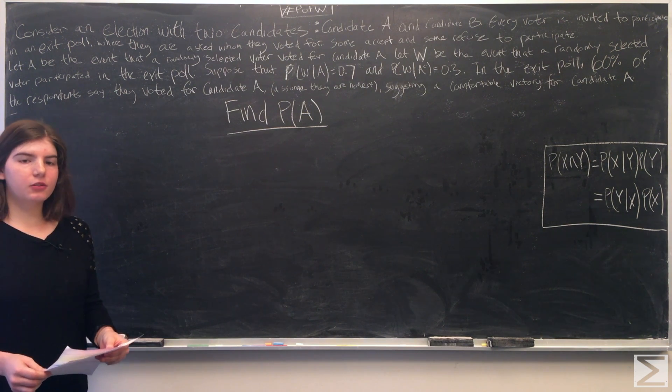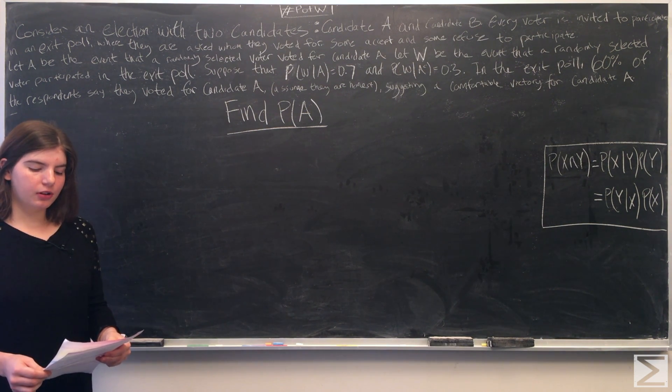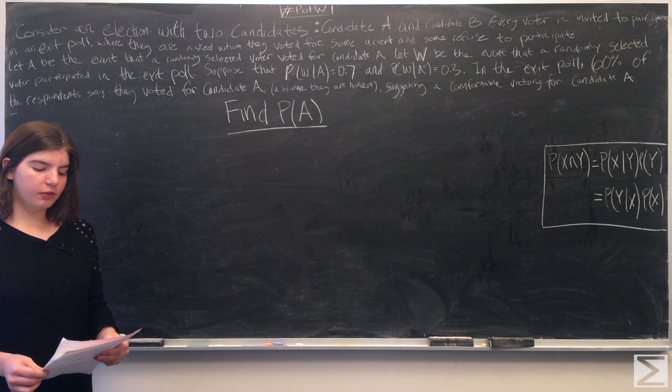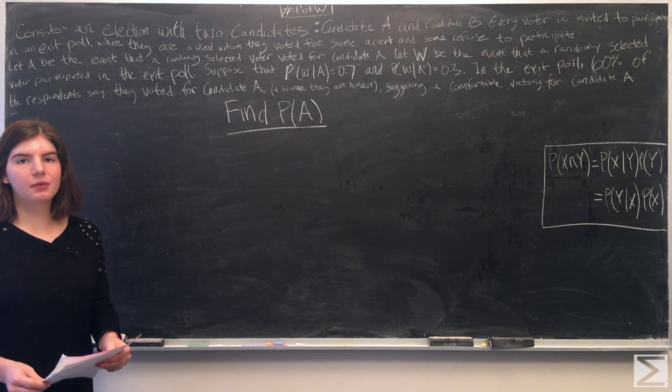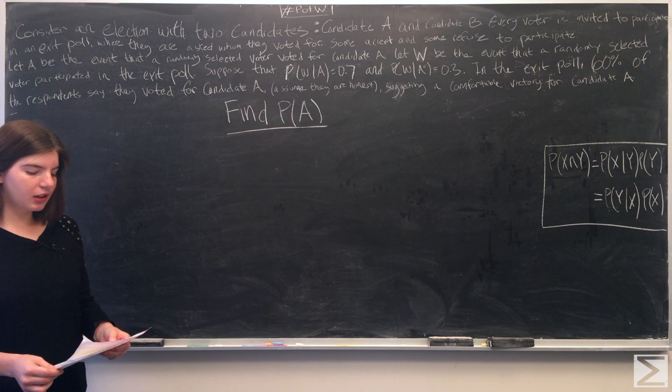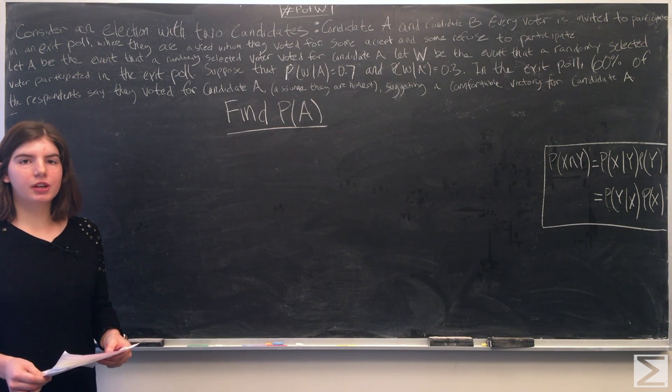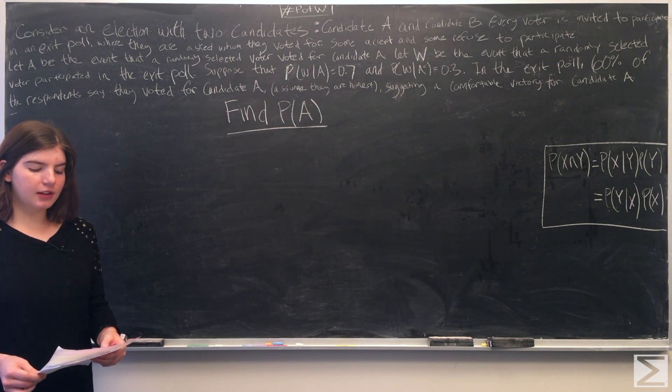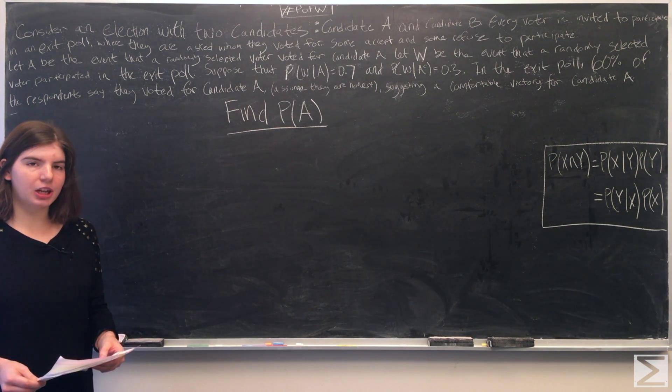Every voter is invited to participate in an exit poll where they are asked whom they voted for. Some accept and some refuse to participate. Let A be the event that a randomly selected voter voted for candidate A and let W be the event that a randomly selected voter is willing to participate in the exit poll.